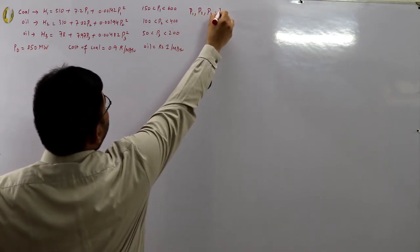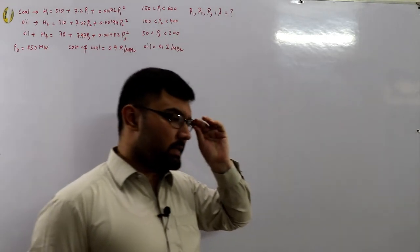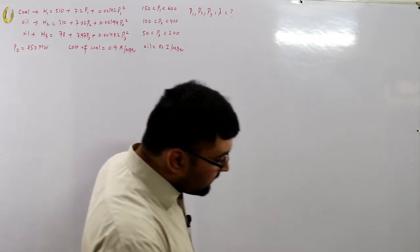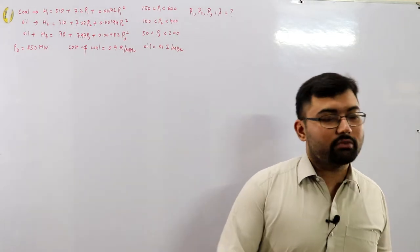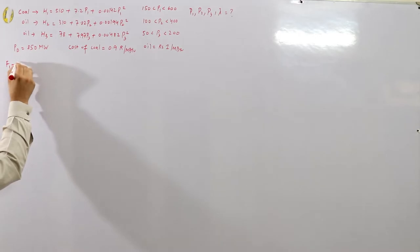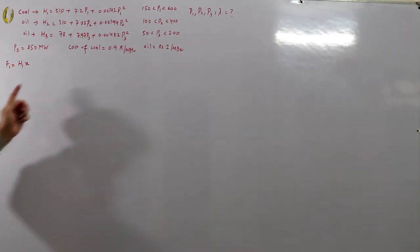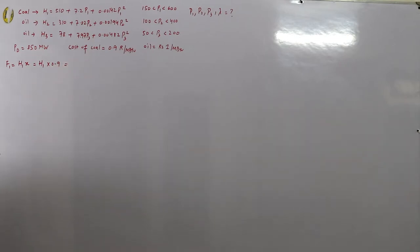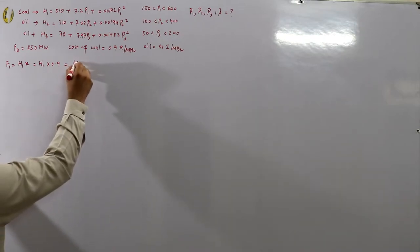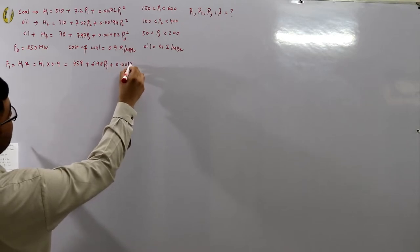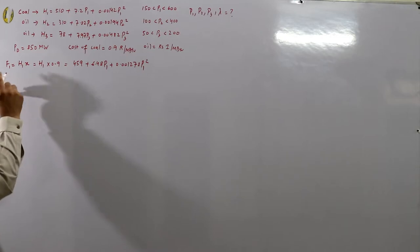Previously we took the cost of coal as 1.1, and in that case p1, p2, p3 lay within the economical range. Today's purpose is to get values outside the economical range. First, find the f functions: f1 = h1 × 0.9 = 459 + 6.48·p1 + 0.001278·p1². Since oil cost is 1, f2 = h2 and f3 = h3.